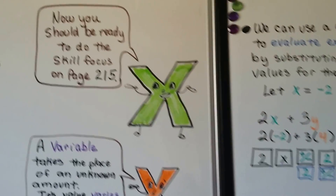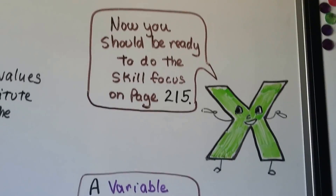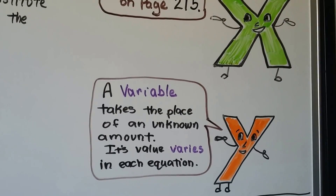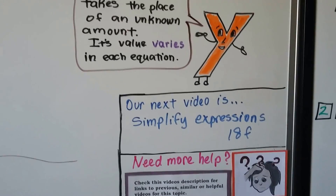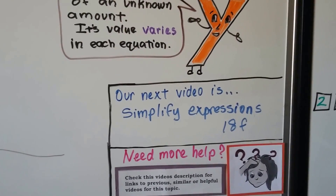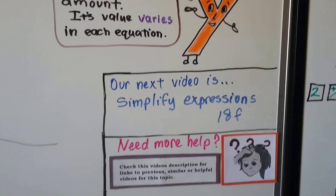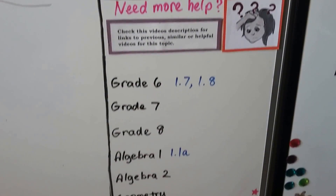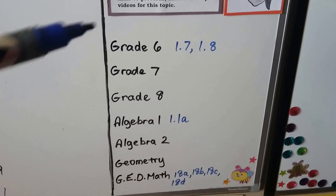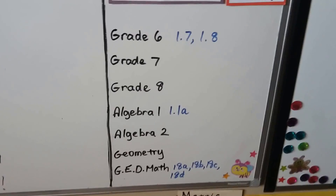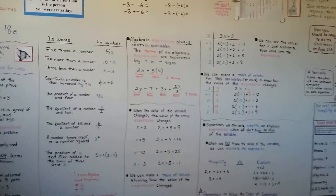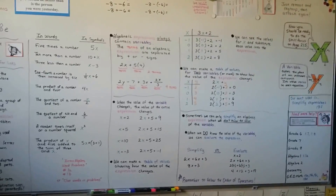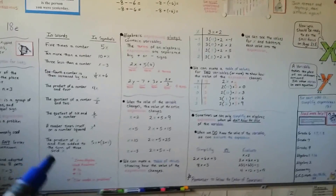You should now be ready to do the skill focus on page 215. Remember, a variable takes the place of an unknown amount and its value varies in each equation. Our next video is going to be simplifying expressions — we're going to condense and combine terms. There will be links to Grade 6 videos, Algebra 1, and the previous GED math videos to make your life easy. Don't skip any videos, and if you're having trouble, go to the links.